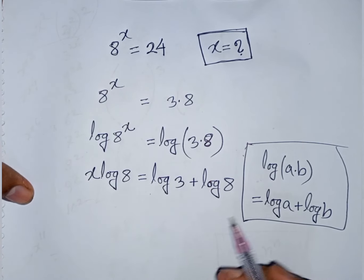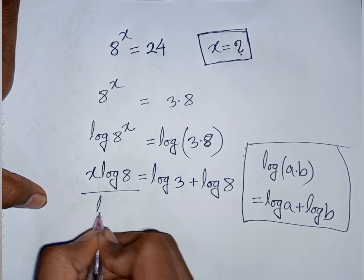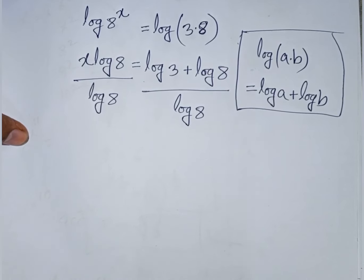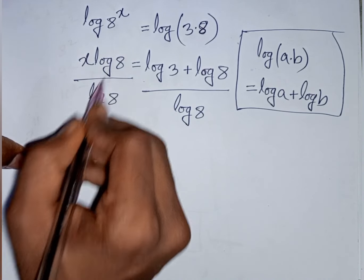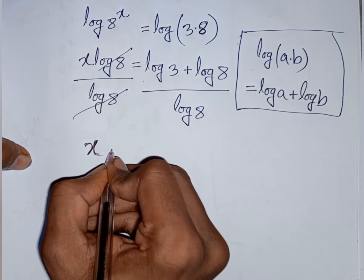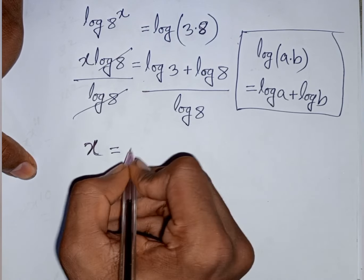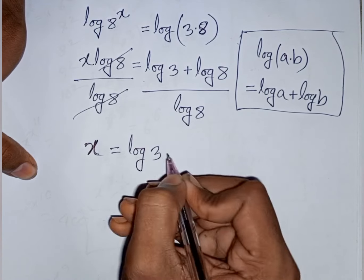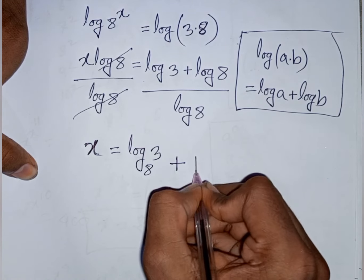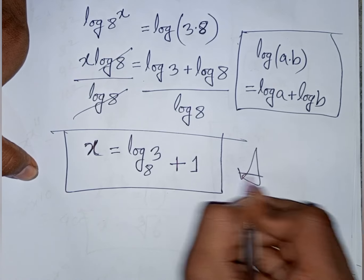This formula is applied here. Now we need the value of x, so divide both sides by log 8. This log 8 and this log 8 will be cancelled, so x equals log 3 over log 8 plus log 8 over log 8. That means x equals log base 8 of 3 plus 1. This is the value of x — this is our final answer.